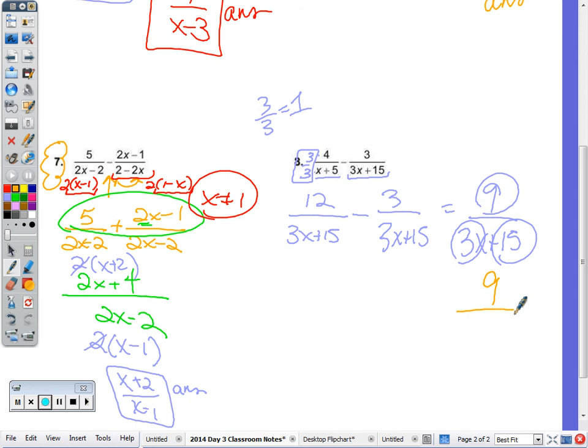If you factor, it's 9 over 3 times x plus 5. The restriction would be x not equal to a negative 5, 3 goes into 9 3 times, and the final answer would be 3 over x plus 5, which is what you would get if you divided everything by 3.